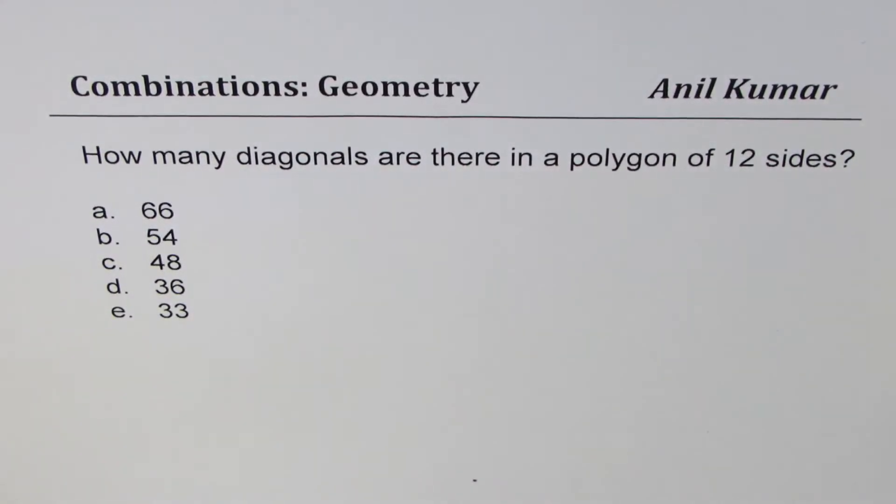I am Anil Kumar sharing with you a few multiple choice questions which will help you for exams like SAT, AP Maths, or many other competitive exams. The question here is: how many diagonals are there in a polygon of 12 sides? Five choices are given to you: 66, 54, 48, 36, and 33. You can pause the video, answer the question, and then look into my suggestions.